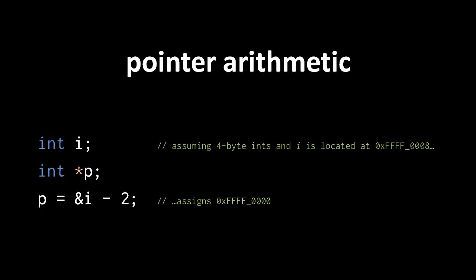We can also subtract integers from pointers, which produces a pointer representing an address that is lower in memory rather than higher. So, again, assuming 4 byte ints, and assuming that the variable i happens to be located at address FFFF0008, then p would be assigned a pointer representing the address FFFF0000, which is 8 bytes lower.